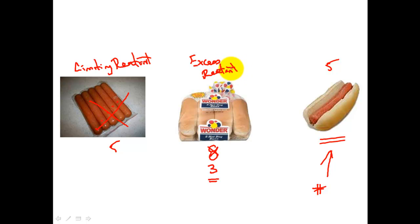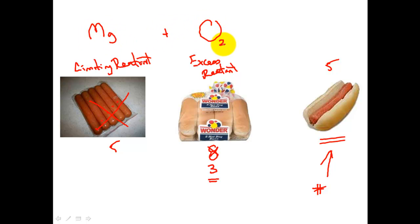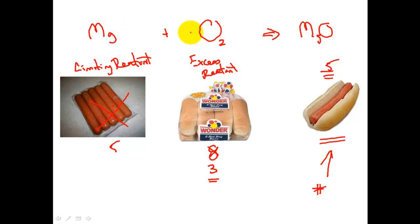It's a good analogy for exactly what we're going to do today. In our reactions, instead of hot dogs we're looking at magnesium, and maybe instead of hot dog buns we're looking at oxygen, and we're going to make magnesium oxide. The maximum amount we can make really depends upon which one of these two reactants runs out first. The second one of my ingredients runs out, I am limited to the number of product I can make.